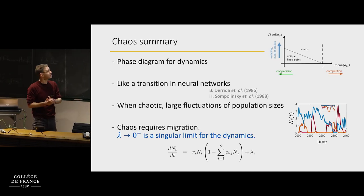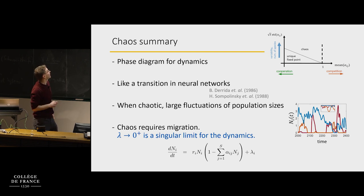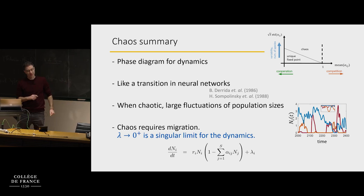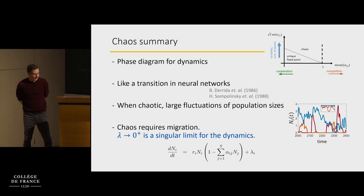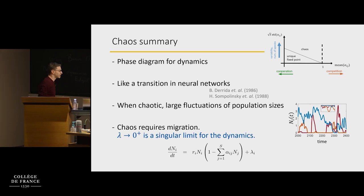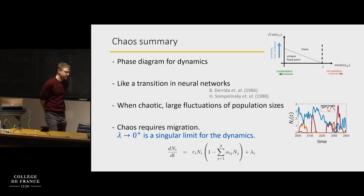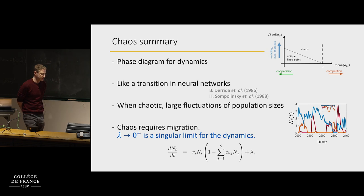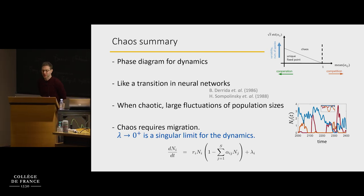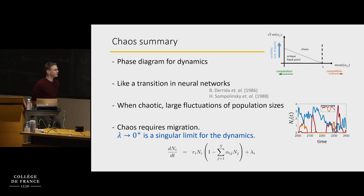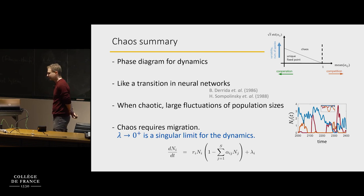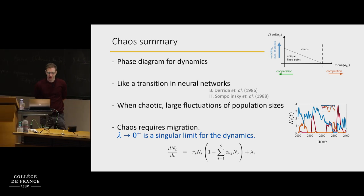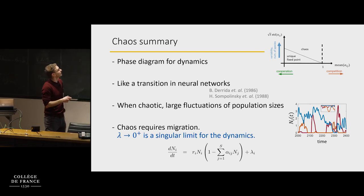That's the basic story of fixed point and chaos. We saw this phase diagram for the dynamics and even saw it experimentally. What I told you so far has a lot in common with a similar transition seen in dynamical systems in other fields. But there's actually one very important thing I haven't discussed yet: when you are chaotic, you see enormous fluctuations in population sizes — by many many orders of magnitude. The question is where does that come from? That is something special to populations.